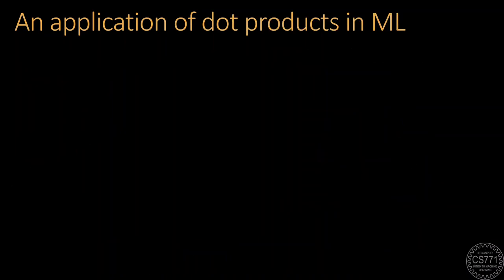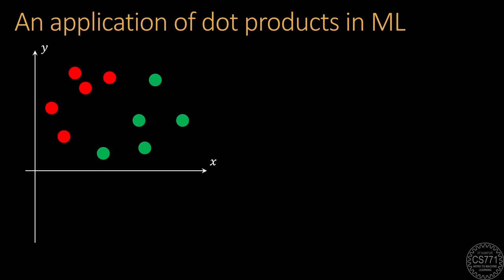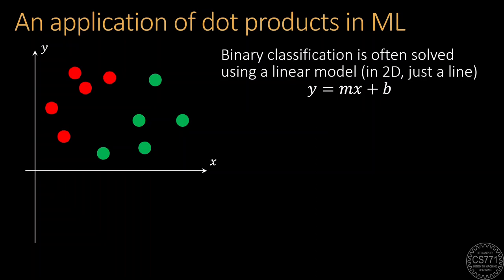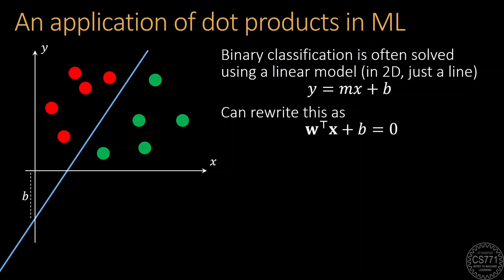Machine learning algorithms also make a lot of use of dot products. An example here is binary classification. One of the simplest models for binary classification is the linear model, which in two dimensions, which is the case here, looks exactly like a line. y equals mx plus b, where m is the slope of the line and b is the intercept of the line. Note that we can actually rewrite this model in the form of w transpose x plus b, where w is now this two-dimensional vector and x is the two-dimensional vector, just encapsulating the two coordinates of the vectors.